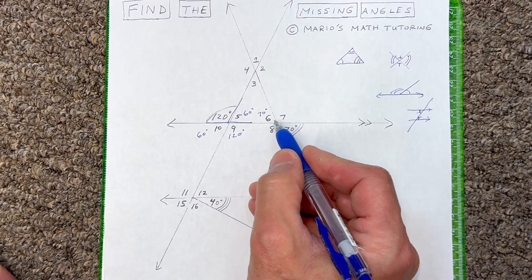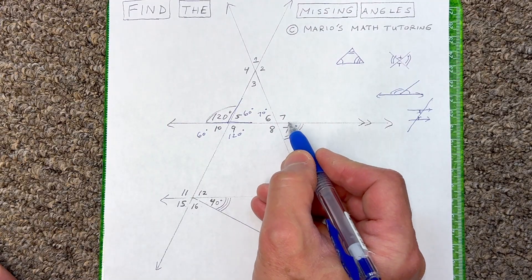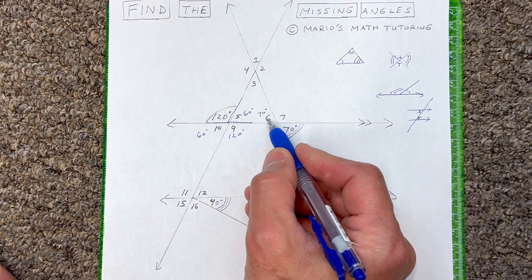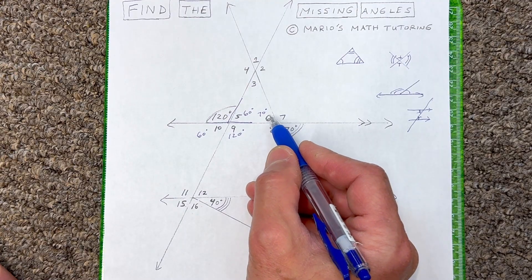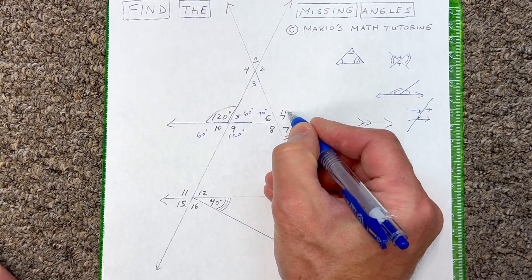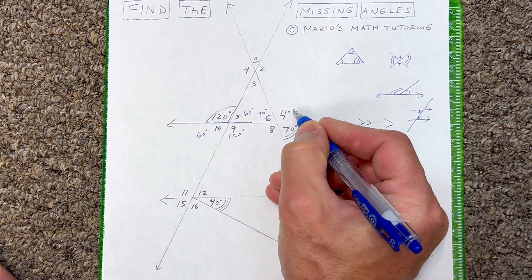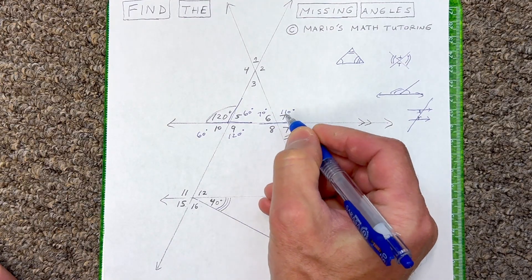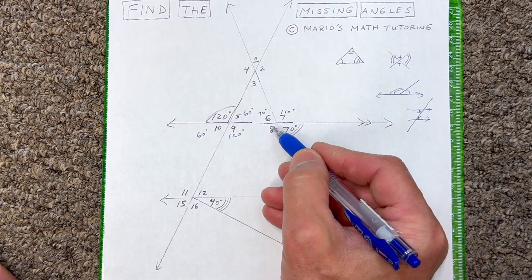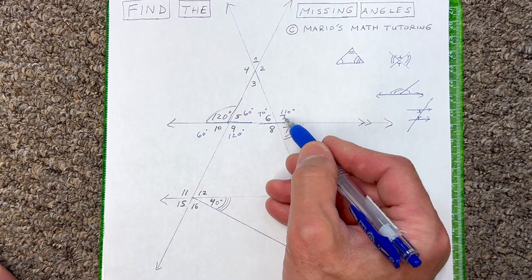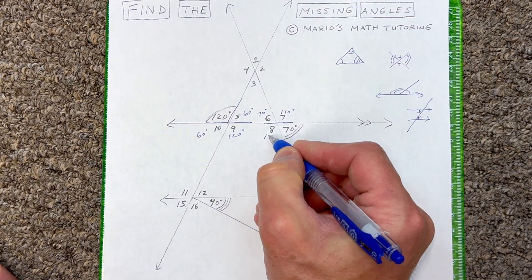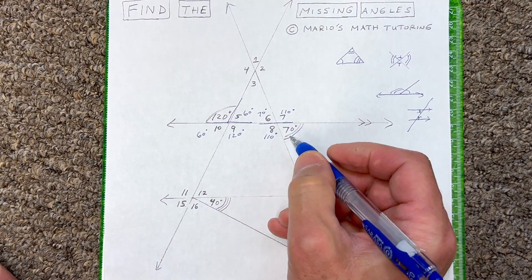The angles next to one another that form a straight line are a linear pair. So 70 degrees plus 110 degrees gives us 180 degrees for this straight line. Then going back to vertical angles, angle 7 and angle 8 are across from each other, so angle 8 is also 110 degrees.